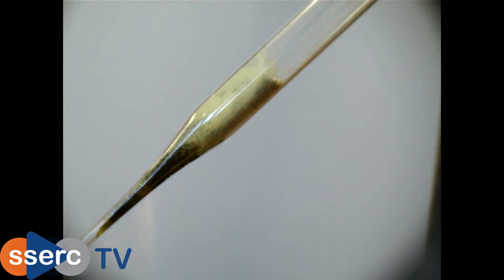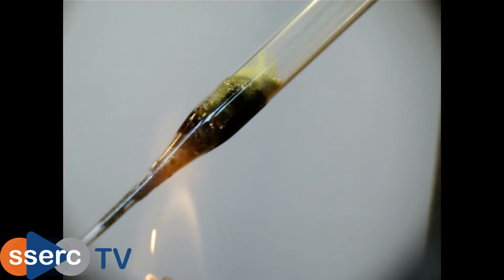We now heat it and we're just using a small spirit burner here. The first thing you see is the sulfur melting and going a dark red. This is purely a physical change. You can also see sulfur vapor above the mixture.